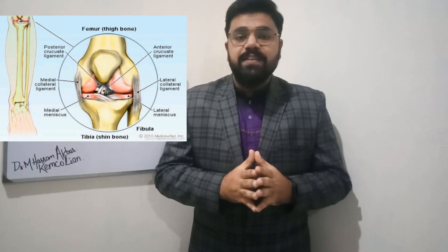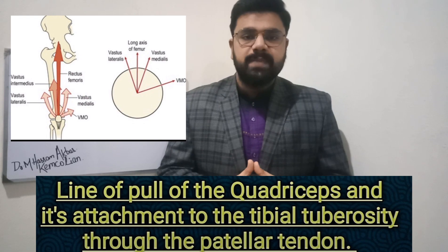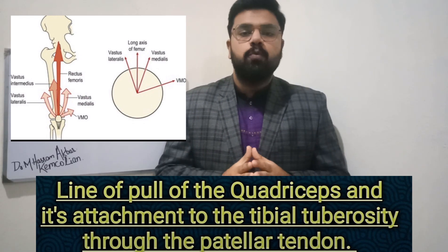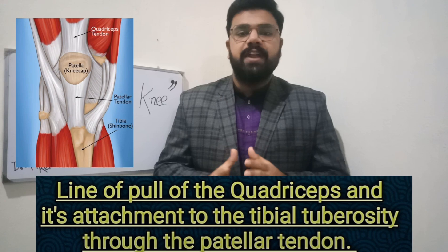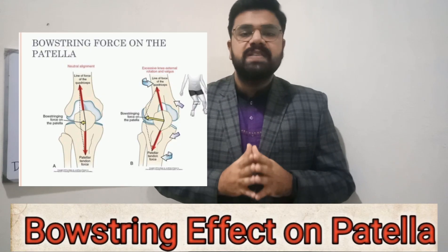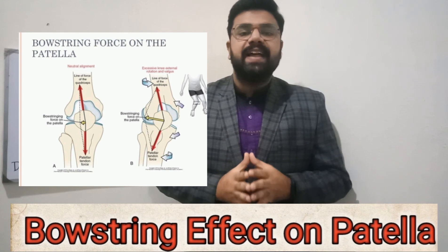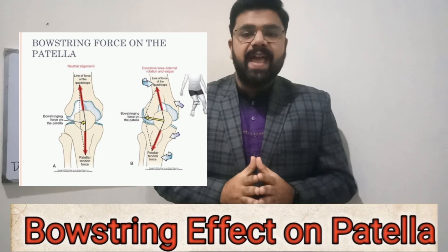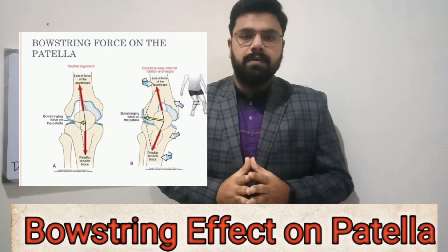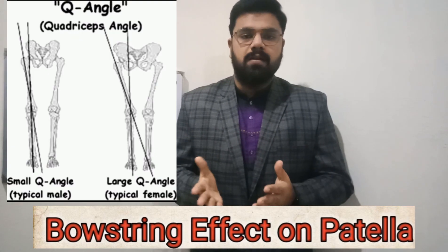The alignment of the patella is influenced by the line of pull of the quadriceps muscle and by its attachment to the tibial tuberosity through the patellar tendon. These two forces have a bowstring effect on the patella that causes the patella to drag laterally, or in the outside direction. This bowstring effect can be described by the Q angle.